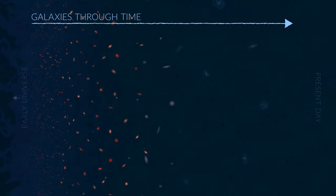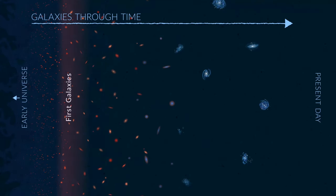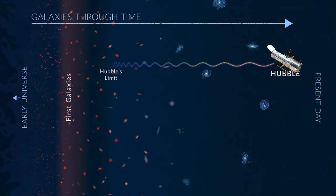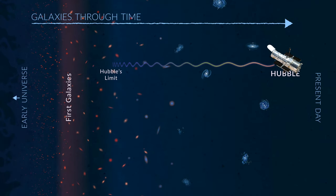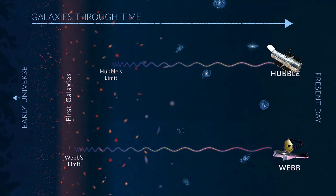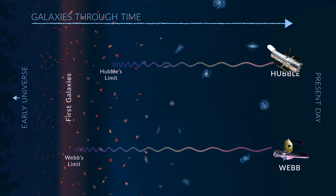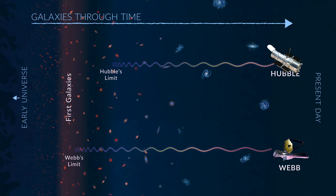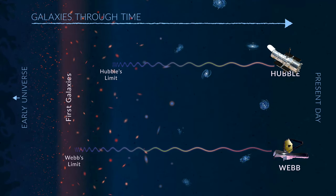Our ability to see into the earliest galaxies is limited by how far the Hubble Space Telescope can reach. This is because the light is so dim and the wavelength of that light has been stretched into the infrared due to the expansion of the universe. The James Webb Space Telescope is larger for collecting more light and built for the infrared part of the electromagnetic spectrum.